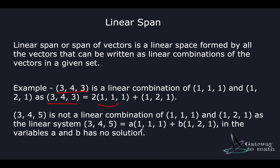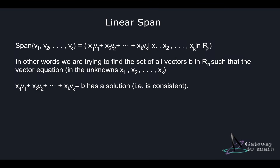Now let's take another example — we're trying to generate the vector [3, 4, 5] using vectors [1, 1, 1] and [1, 2, 1] with scalars a and b. If you try this on paper, for no values of a and b will you actually get [3, 4, 5] back. So we can say [3, 4, 5] does not span in these two vector spaces, because a and b have no solution.